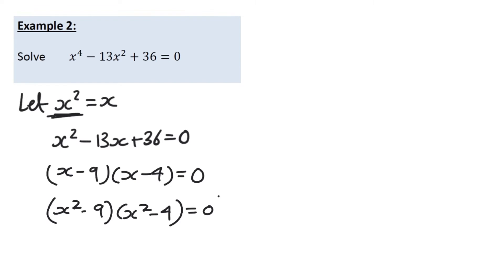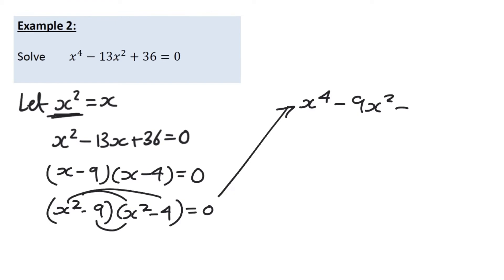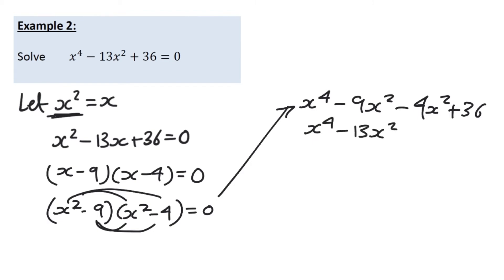We can verify this by expanding: x squared times x squared equals x to the power of 4; minus 9 times x squared equals minus 9x squared; x squared times minus 4 equals minus 4x squared; and minus 9 times minus 4 equals 36. Adding together gives x to the power of 4 minus 13x squared plus 36 equals 0 — exactly our original equation.